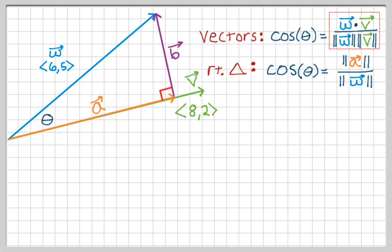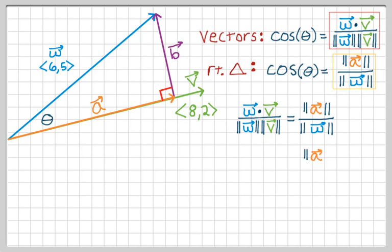So I have two things that are both equal to cosine of θ, so they must be equal to each other. So let's jot that down. This is why we didn't want to use any of the numbers right away. Let's see what we can work out first. So we get that the magnitude of a is w·v over the magnitude of v. So I'm getting somewhere now.